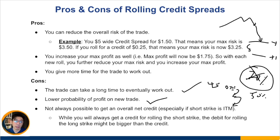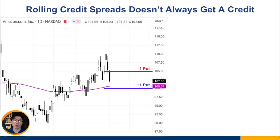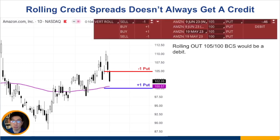The last con: it's not always possible to get an overall net credit, especially if your short strike is in the money. While you always get a credit for rolling the short strike, the debit for rolling the long strike might be bigger than that credit. Using Amazon as an example: if you have a bull put spread that is now in the money and you try to roll it, you notice it ends up in a debit instead of a credit. If there's no way to roll for a net credit, you're pretty much stuck in that position.